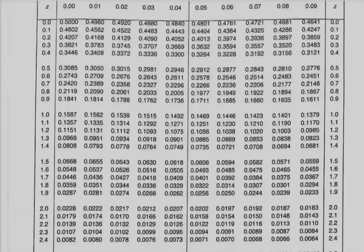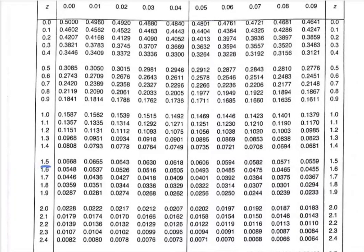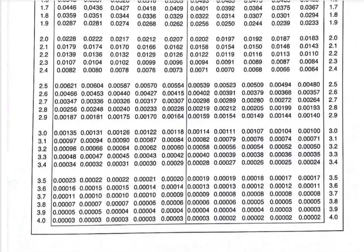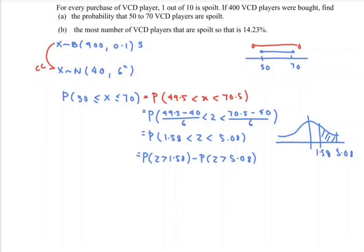Referring to the table, for Z = 1.58 we have 0.0571. Looking for Z = 5.08, the maximum in the table is 4.09, which already gives approximately 0. So P(Z > 5.08) ≈ 0. Therefore, P(50 ≤ X ≤ 70) = 0.0571 − 0 = 0.0571.